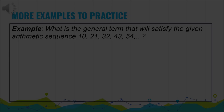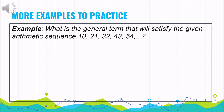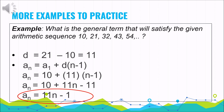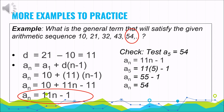Here is the challenge: what is the general term that will satisfy the sequence 10, 21, 32, 43, and 54, and so on? Pause the video and check your answer later. The common difference is 11 and the general term is 11n minus 1. Checking, a sub 5 equals 54, which satisfies the general term. Did you get it right? Well done, and for others, just keep trying and validate your work.